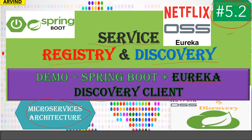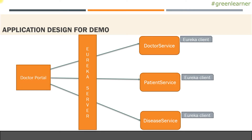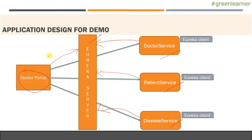This is part two, where we were discovering services and we will explore more about the Eureka discovery client and what it can do. This is the design we have seen in the demo — the doctor service, patient service, digit service, and the Eureka server. They have all registered themselves with the Eureka server, and now the doctor portal is using the service ID to query the Eureka server to get individual services to call. We have one instance, two instances of some services.